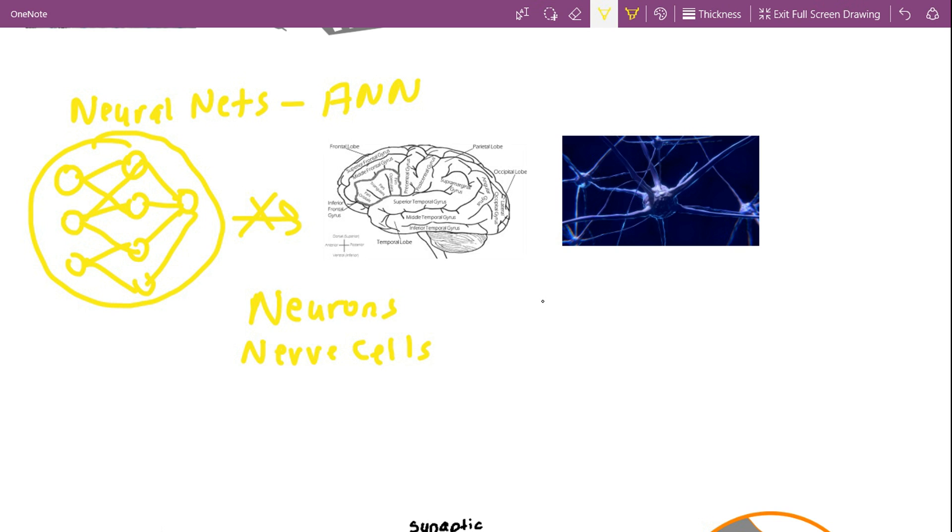An average human brain consists of over 100 billion neurons which are connected together in a highly complex manner. There are over trillions of interconnections between them.